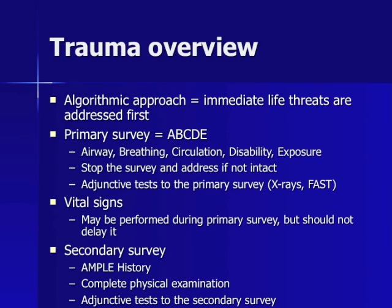The primary survey should be stopped and addressed if any portion of the survey is not intact. Adjunctive tests to the primary survey occur after the primary survey, including chest x-ray, pelvis x-ray, and the FAST scan ultrasound. Vital signs are performed either during or after the primary survey, but they should never delay completion of the primary survey.